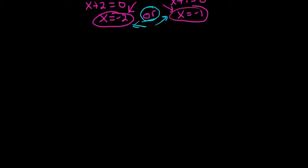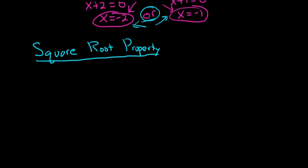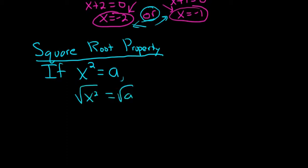The next strategy for solving quadratic equations is the square root property. We're just going to touch on each technique, and in the videos that follow you'll have lots of examples. This one's really useful. It says: if x squared is equal to some number A, then to get rid of the squared, you take the square root of both sides. Whenever you take the square root of a variable squared, you always have to put a plus or minus. That's the key — that's the square root property.